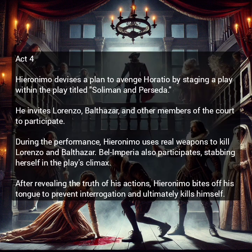In Act 4, Hieronimo devises a plan to avenge Horatio by staging a play within the play titled Soliman and Perseda. He invites Lorenzo, Balthazar, and other members of the court to participate. During the performance, Hieronimo uses real weapons to kill Lorenzo and Balthazar. Bellimperia also participates, stabbing herself in the play's climax. After revealing the truth of his actions, Hieronimo bites off his tongue to prevent interrogation and ultimately kills himself.